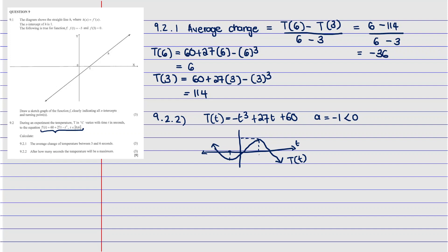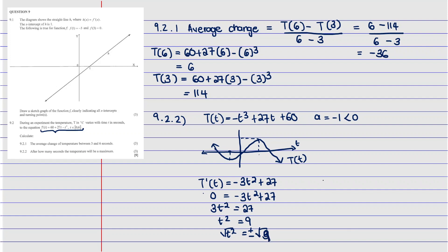To find the turning points, we find T'(t) and set it equal to zero. T'(t) = −3t² + 27. Setting it to zero: 0 = −3t² + 27, so 3t² = 27, which gives t² = 9. Taking the square root of both sides gives t = ±√9.